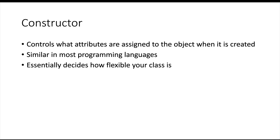For example, if we had two constructors — one that accepted just a name, and one that accepted a name and a date — then we could create an object from our class with just a name, or with a name and a date, creating more flexibility. The more constructors you have, the more flexible your class becomes.